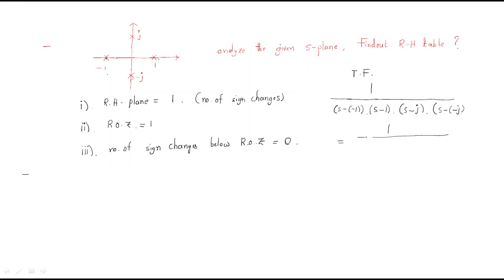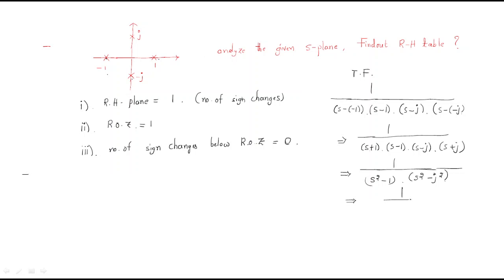So the transfer function is: 1 divided by (s+1)(s−1)(s−j)(s+j). Simplifying: (s+1)(s−1) = s²−1, and (s−j)(s+j) = s²−j² = s²+1. Using the identity (a+b)(a−b) = a²−b², we get (s²)²−1² = s⁴−1. So the transfer function is 1/(s⁴−1).